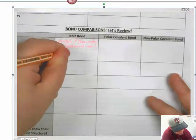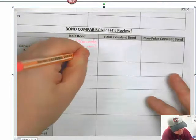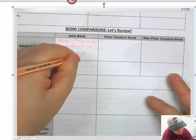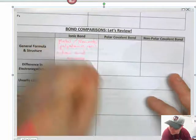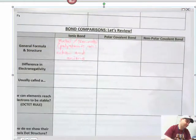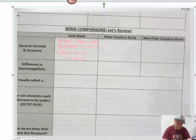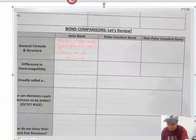These have cations and anions in lattices that are in ionic solids.